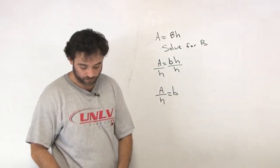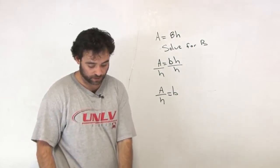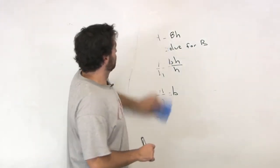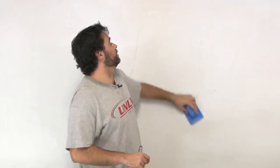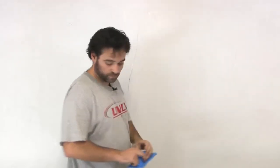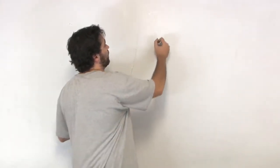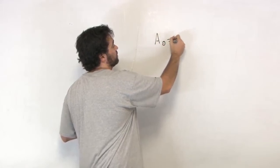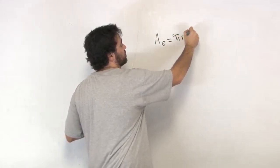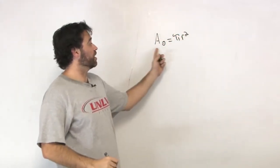So, formulas. Talking about formulas here. Say we have area of a circle is equal to pi r squared. Area of a circle is equal to pi r squared.